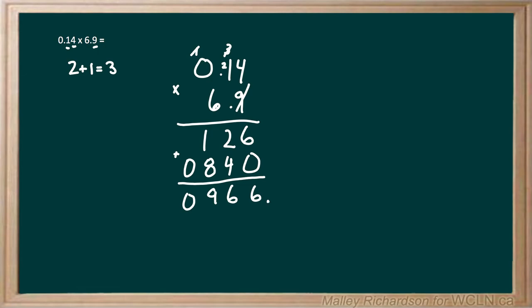So if our decimal starts here, we're gonna move it over once, then twice, then a third time to leave our decimal right before the 9. So our answer of 0.14 times 6.9 is 0.966.